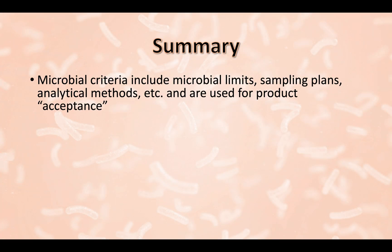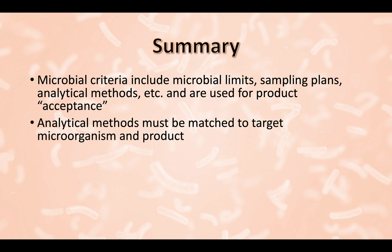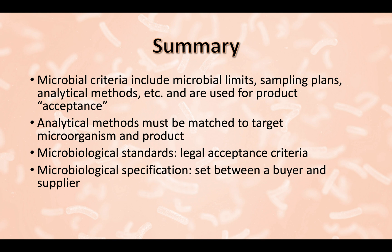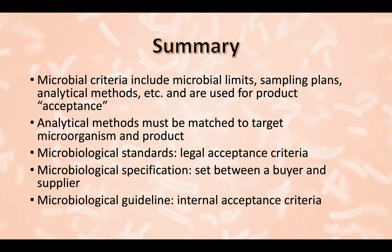In summary, microbial criteria include microbial limits, sampling plans, and analytical methods, and are used to determine product acceptance. Analytical methods must be matched to the target organisms and the product. Microbiological standards are legal acceptance criteria. Microbiological specifications are set between a buyer and a supplier. Microbiological guidelines are internal acceptance criteria.